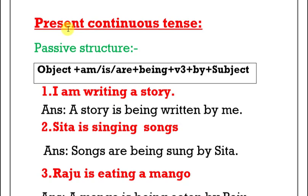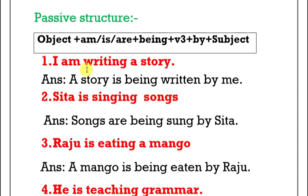We are looking at active voice into passive voice in present continuous tense. The structure is: Object + am/is/are + being + V3 + by + Subject. Based on this structure, we can change from active voice into passive voice.